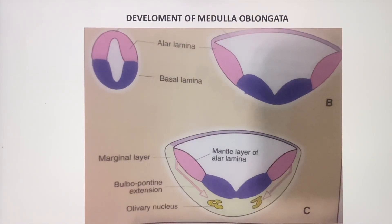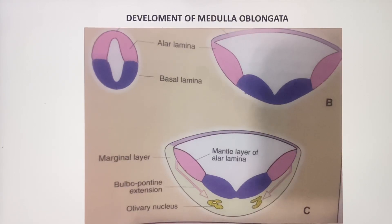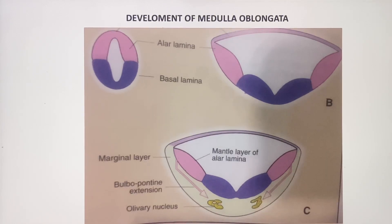This complete diagram shows the development of the medulla oblongata: initially the formation of the alar and basal lamina, then widening of the roof plate, followed by the alar and basal laminae coming to lie in the floor of the developing fourth ventricle. Then migration of cells from the alar lamina to the marginal layer of the basal lamina occurs — this is the caudal portion of the bulbopontine extension — and those cells give rise to the olivary nuclei.